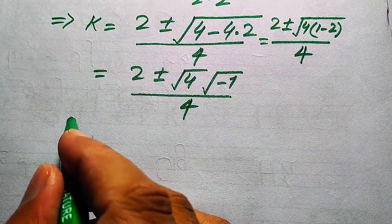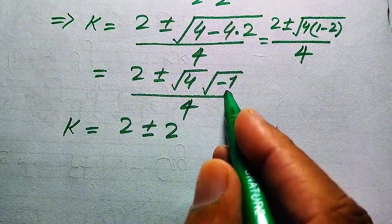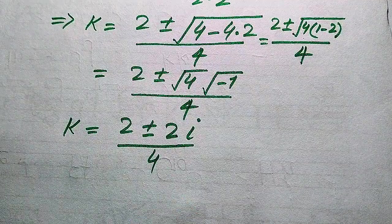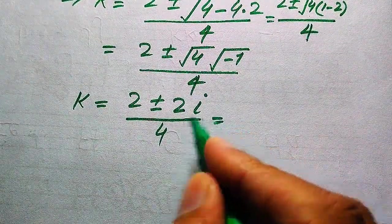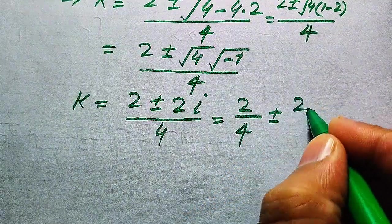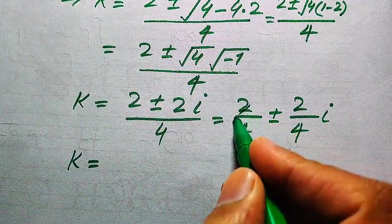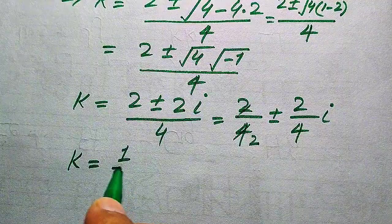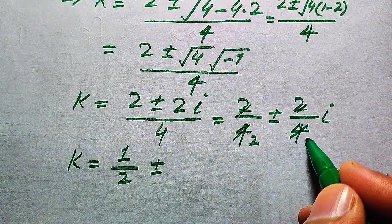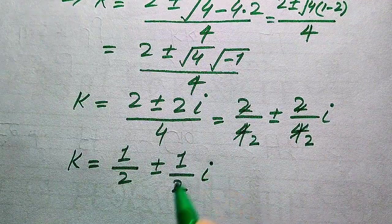Applying the square root separately: square root of 4 is 2, and square root of minus 1 is i (iota), giving k equals 2 plus or minus 2i, divided by 4. Breaking the fraction: k equals 2/4 plus or minus (2/4)i, which simplifies to k equals 1/2 plus or minus (1/2)i.